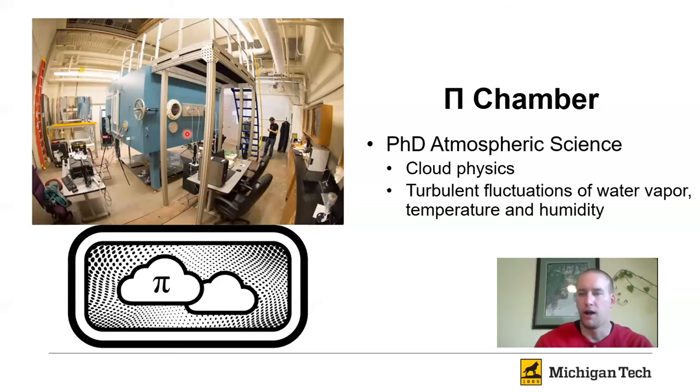The broad cloud droplet size distributions are important because they allow collisions between droplets and when you start having collisions between droplets they stick together. And eventually you can start to form precipitation.